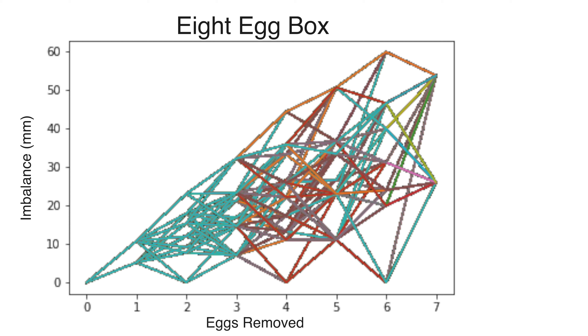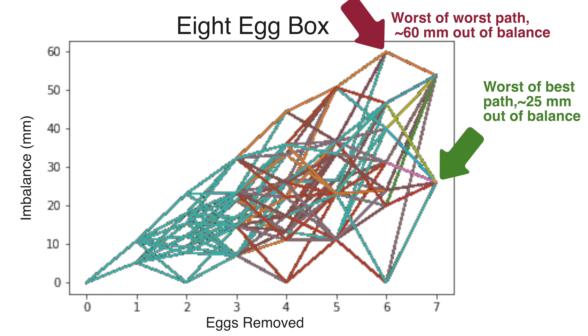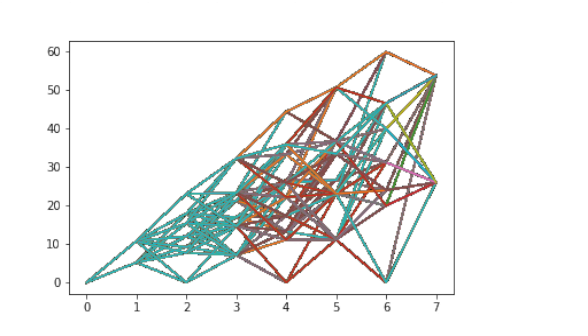For example, with the eight egg box, if you choose the worst path, you could be as many as 60 millimeters out of balance at some point. The other nice thing about doing the calculation is that now there's a fun and compelling anecdote to relay to anyone watching you do something with eggs.